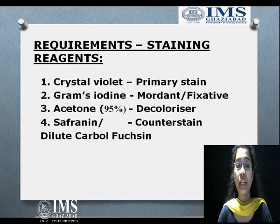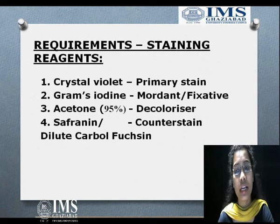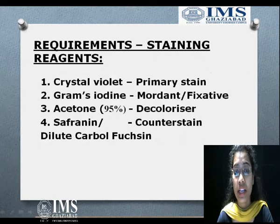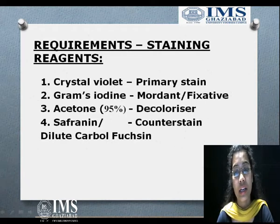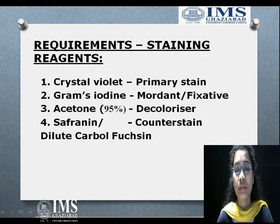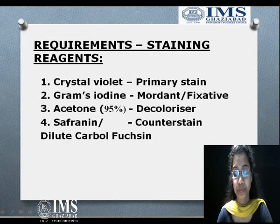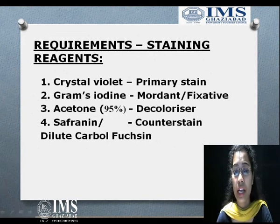Then we use acetone 95% or ethyl alcohol as a decolorizer. After decolorization, we use safranin as a counter stain. Those bacterial cells which do not retain crystal violet color will take up this counter stain, safranin, and appear red in color. We can also use dilute carbol fuchsin stain instead of safranin.